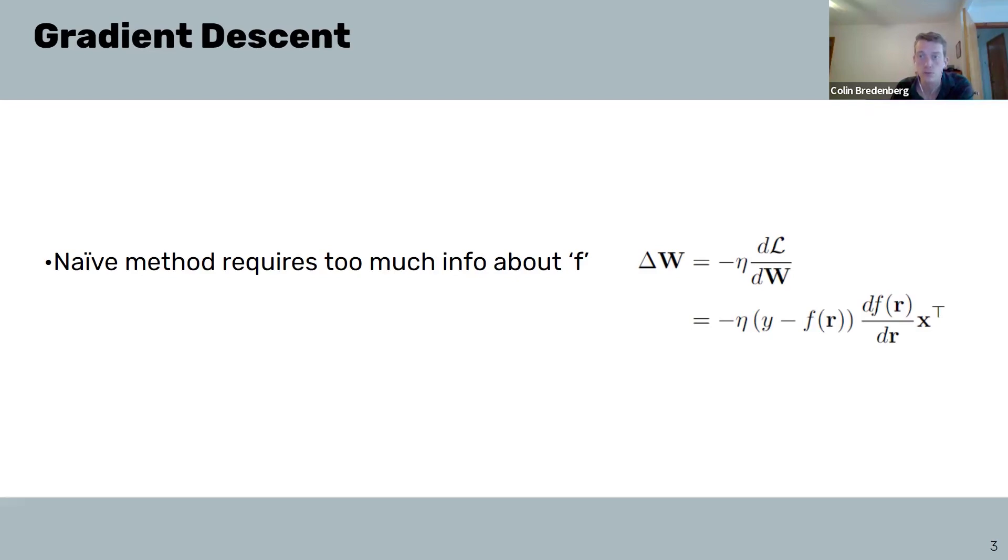Calculating the gradient through the chain rule reveals that in order to calculate the parameter update, we need to understand how changes in neural network activity change our black box output function F, meaning we need access to the Jacobian of the output with respect to the fire rates. As we'll see in subsequent sections, the Jacobian is something that a single synapse could not conceivably have access to without some clever approximations.